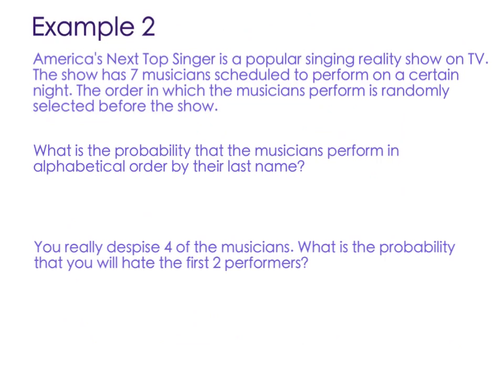In this next example, now it gets tougher. America's Next Top Singer is a popular singing reality show on TV. The show has seven musicians scheduled to perform on a certain night. The order in which the musicians perform is randomly selected before the show. So they don't know what order they're going to go in. They just draw names out of a hat, or whatever. What is the probability that the musicians perform in alphabetical order by their last name? So if they just randomly chose their names and it just happened to be alphabetically, what are the chances of that happening? Well, now we're going to calculate those chances.